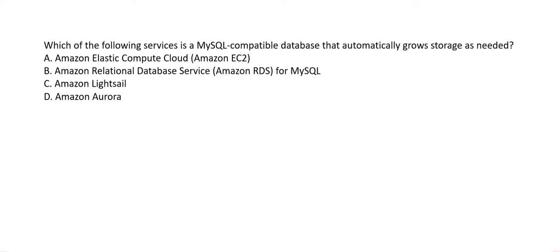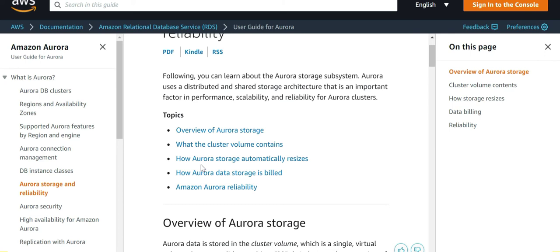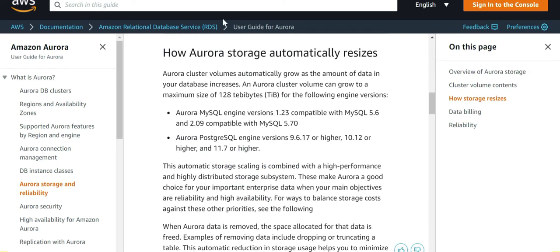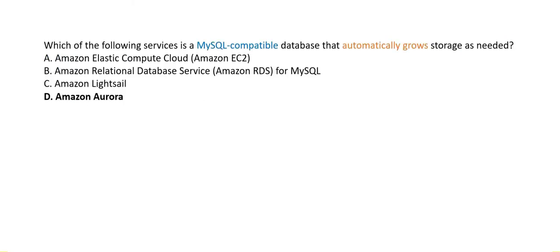Which of the following services is a MySQL-compatible database that automatically grows storage as needed? The keywords are 'MySQL compatible' and 'automatically grows storage.' RDS is MySQL-compatible but does not grow storage automatically. Aurora is MySQL-compatible and does grow storage automatically, as the documentation confirms that Aurora cluster volumes automatically grow as data increases. Hence Aurora is the right answer.